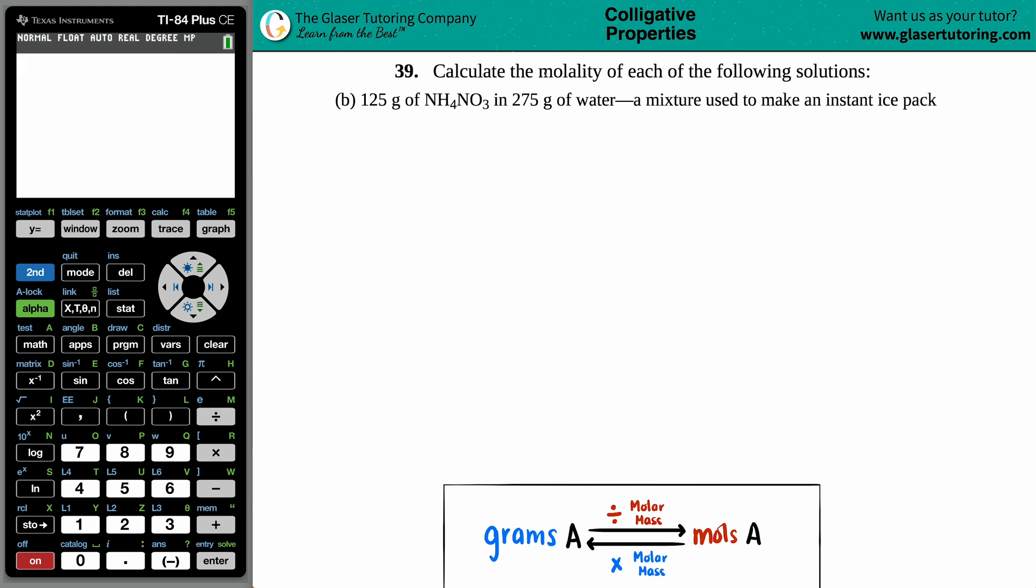Number 39, calculate the molality of each of the following solutions. And then we have letter B. In this case, we have 125 grams of NH4NO3 in 275 grams of water, which is a mixture used to make an instant ice pack. But in this case, we just need to find the molality, right?